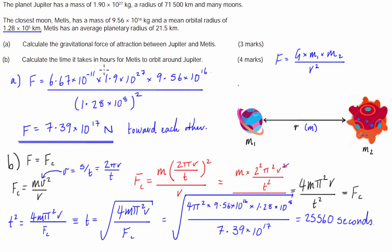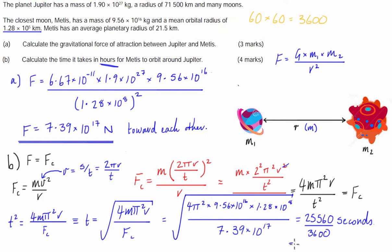However, the question asks for the answer in hours. There are 3600 seconds in an hour (60 seconds times 60 minutes), so dividing 25,560 by 3600 gives us 7.1 hours.